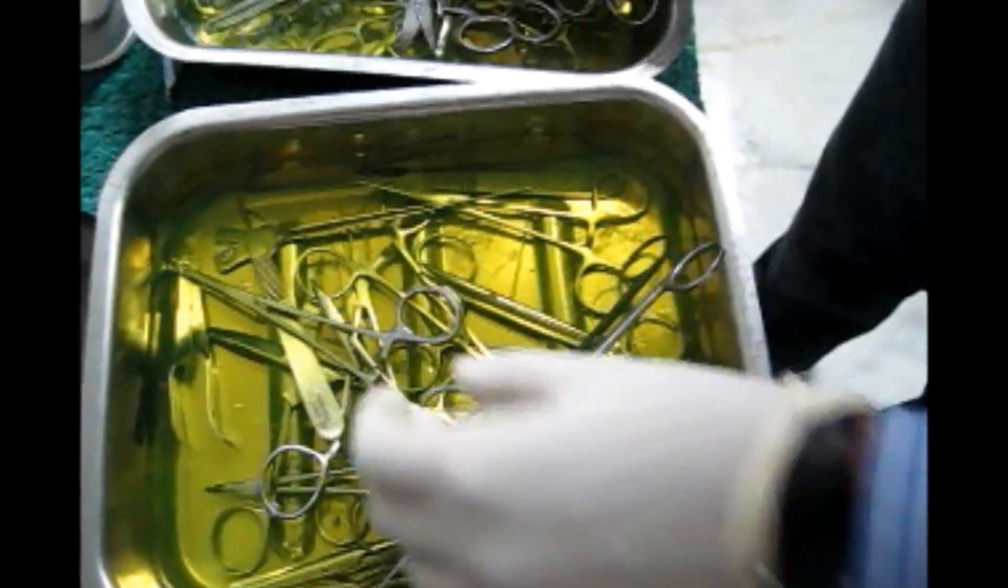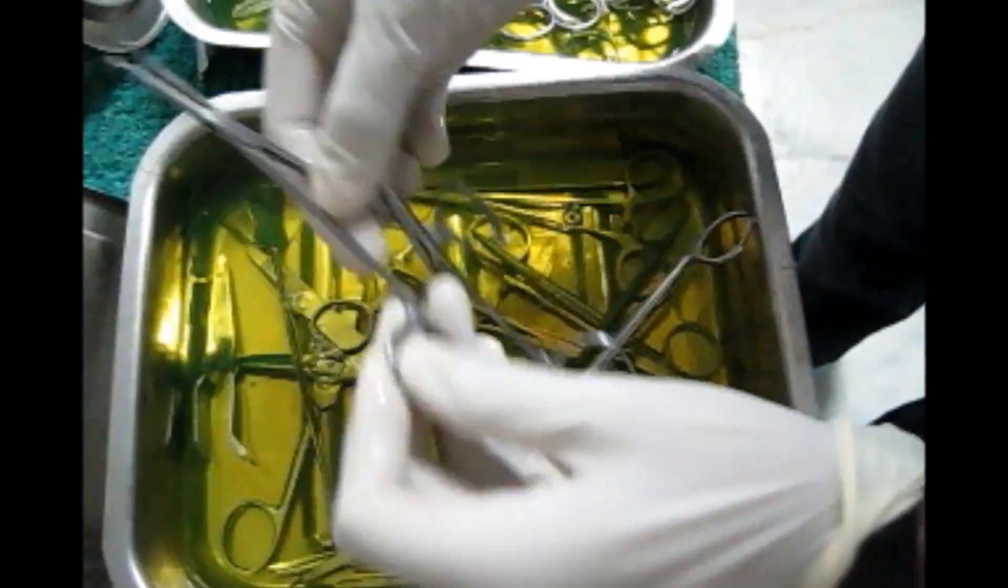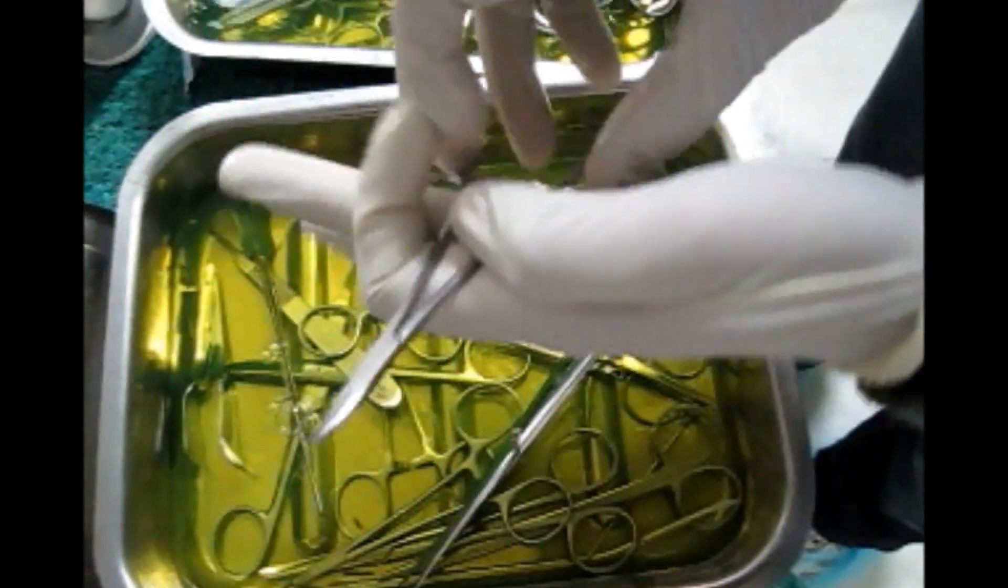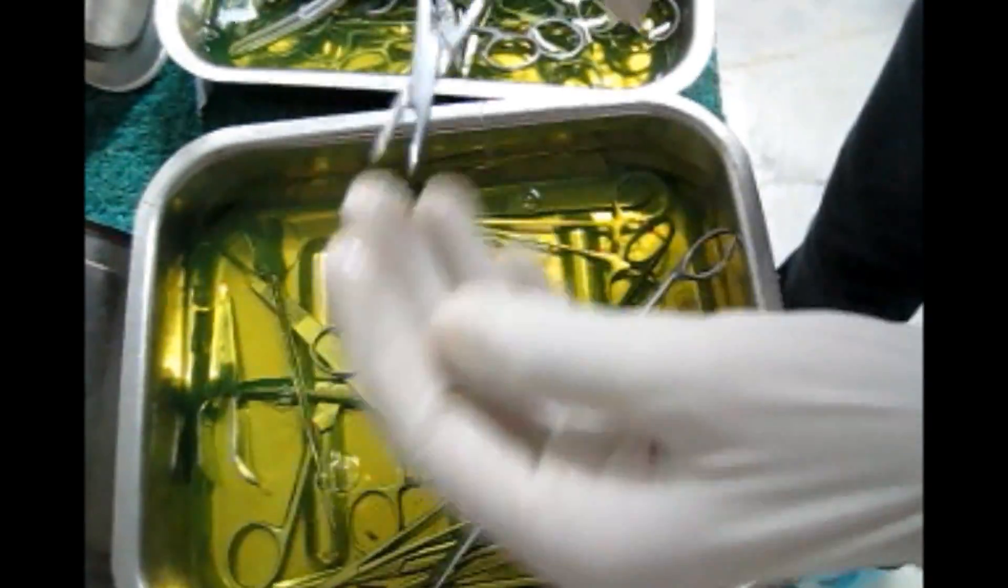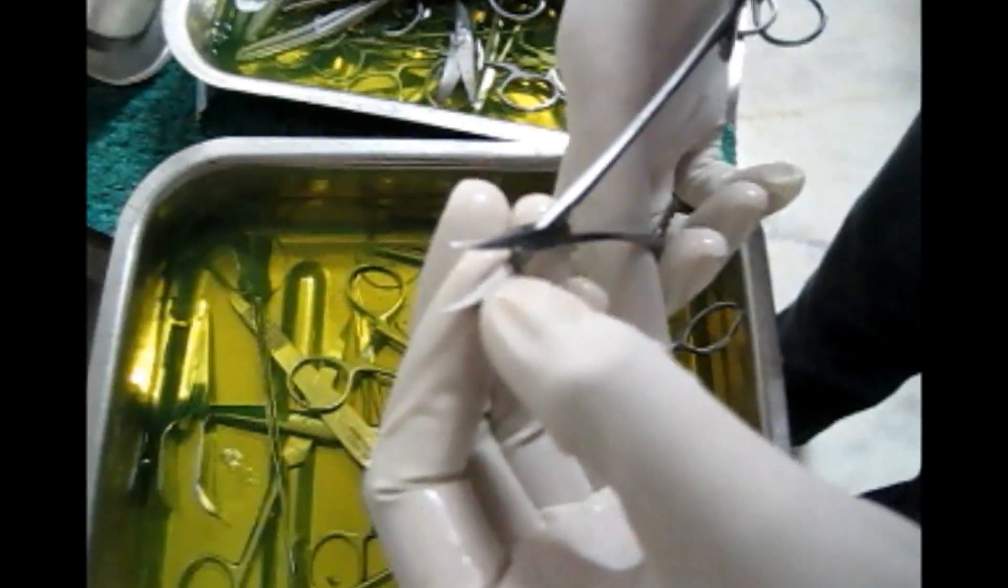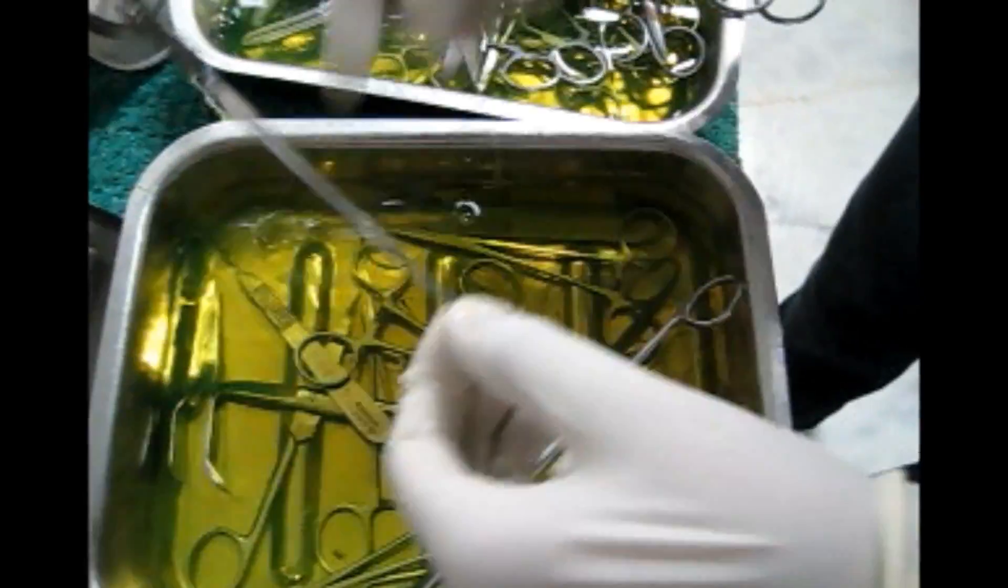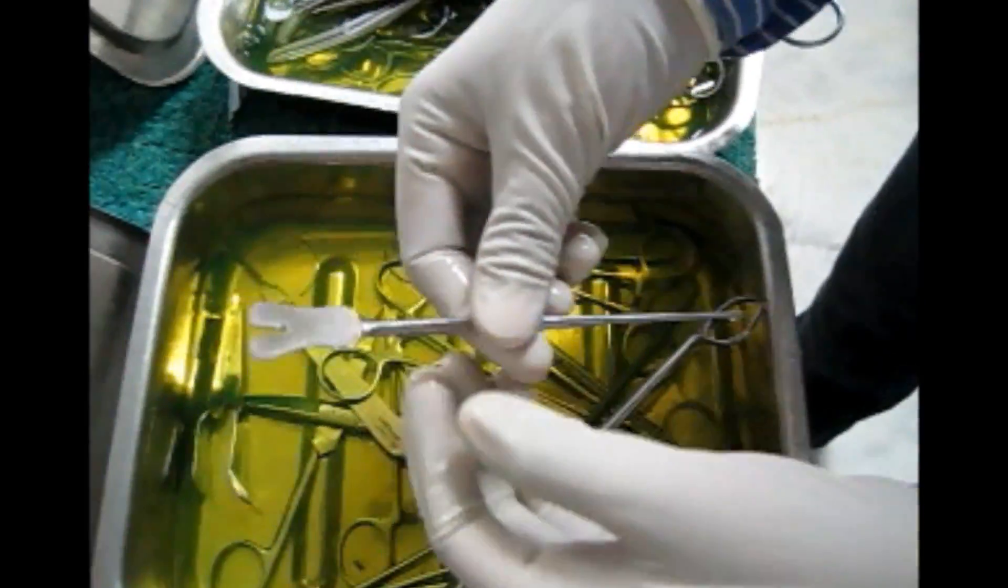This is the bone cutter. This is another ring forcep. Another one, and this is the plain mosquito. You can see there are no dentations.